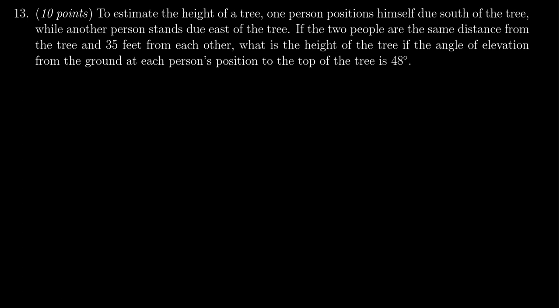I'm just going to read it real quick. To estimate the height of a tree, one person positions himself due south of the tree while another person stands due east of the tree. If the two people are the same distance from the tree and 35 feet from each other, what is the height of the tree if the angle of elevation from the ground at each person's position to the top of the tree is 48 degrees?